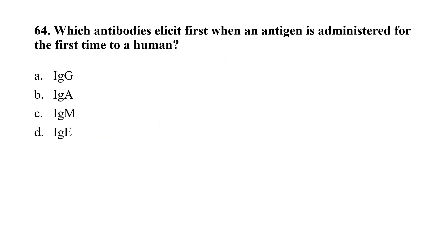Question number 64. Which antibody is elicited first when an antigen is administered for the first time to a human? Option A, IgM and IgG; Option B, IgA; Option C, IgM; Option D, IgE. The correct option is C, IgM, which is the first antibody that appears when an antigen is administered to a human for the first time.